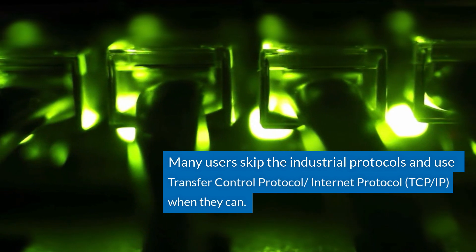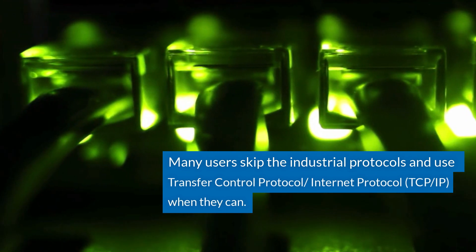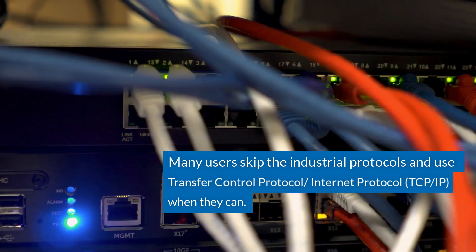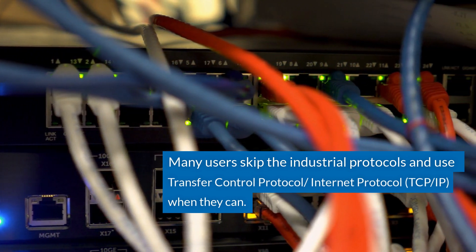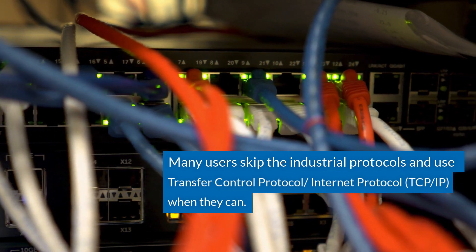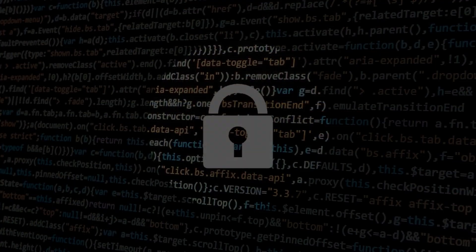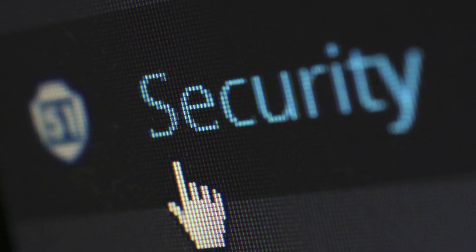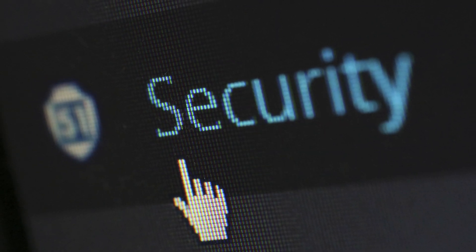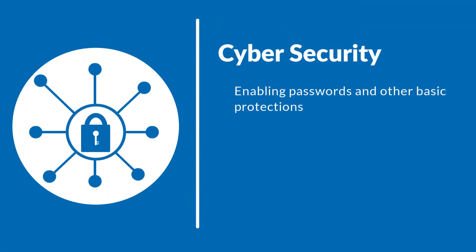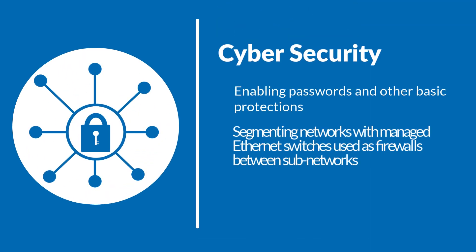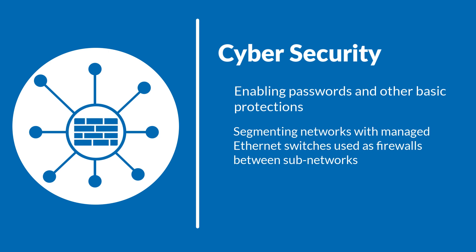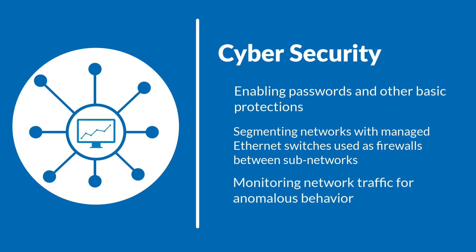When they can, many users skip the industrial protocols and use plain vanilla Ethernet, or its more technical name, Transfer Control Protocol/Internet Protocol (TCP/IP), which can communicate more widely. Of course, the downside to all these added connections and links to wider networks and systems is more vulnerabilities and vectors for probes, intrusions, and attacks. This requires users to assess, monitor, and implement cybersecurity by enabling passwords and other basic protections, segmenting their networks with managed Ethernet switches used as firewalls between subnetworks, and monitoring their network traffic for anomalous behaviors.